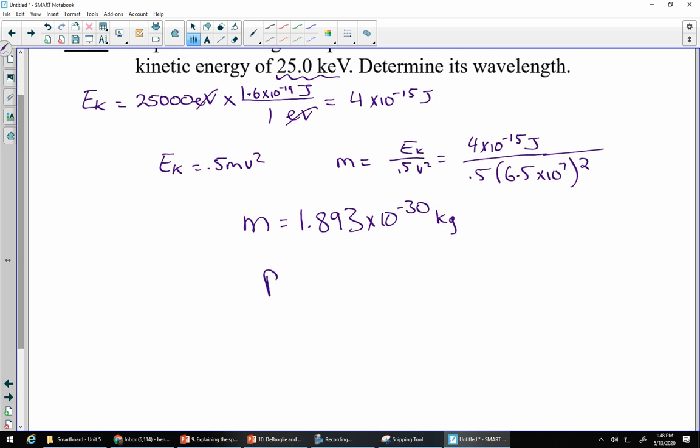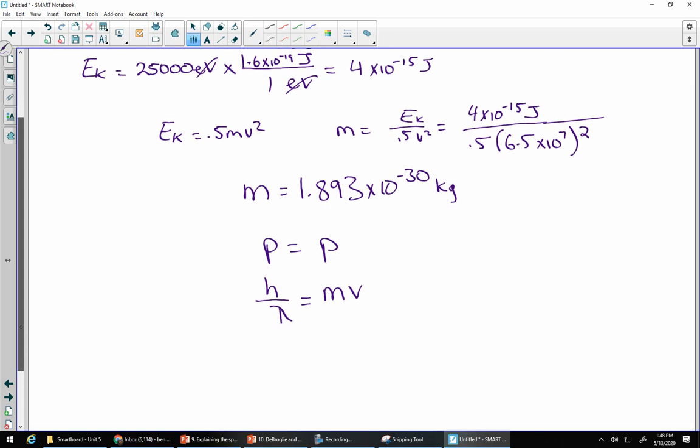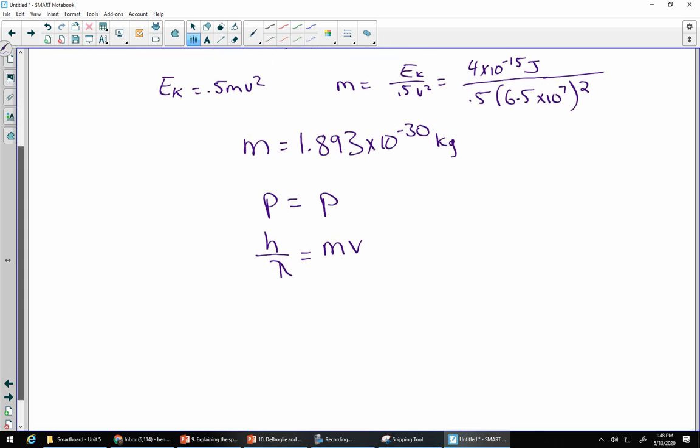We want to rearrange and solve for m. So m must be Ek over 0.5 v squared. We've now got all those values. So let's go ahead and plug them in. 4 times 10 to the negative 15 joules, divided by 0.5, divided by the speed squared, 6.5 times 10 to the power of 7. Remember to square that one.